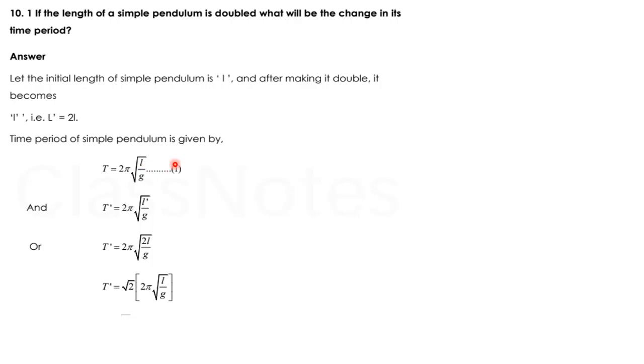The answer is, students, you know the formula of time period of simple pendulum: T equals 2π√(L/g). The initial length of pendulum is L. But after making it double, it becomes 2L. So we have to put 2L instead of L.